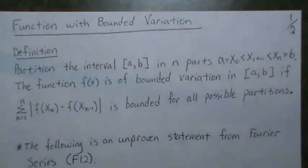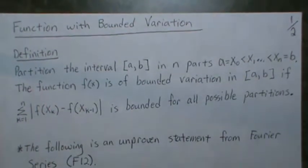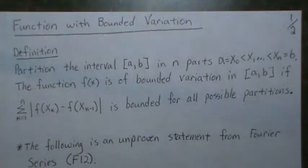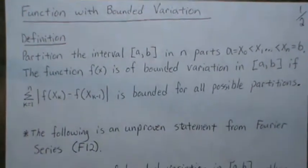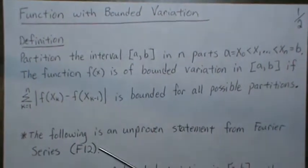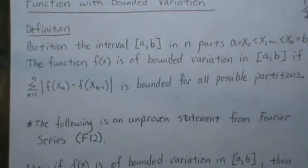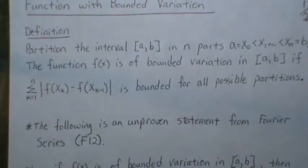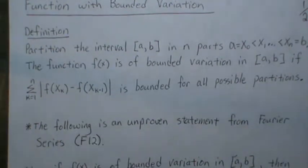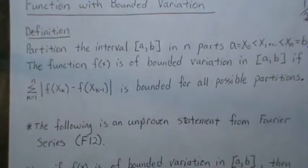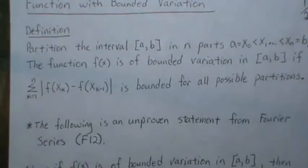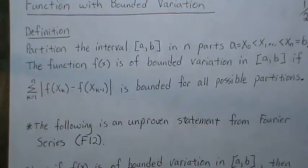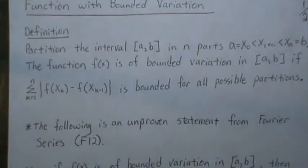There are examples of bounded functions that do not have bounded variation, so it's a measure of how a function oscillates and how quickly it oscillates. In my Fourier series video 12, I stated the following without proof — Jordan's condition for a Fourier series. My guess is that he needed this statement to prove Jordan's condition, so he created what is often called Jordan's decomposition.